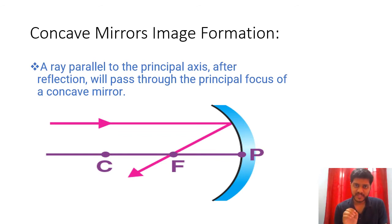Now the image formation. First of all, we have to take certain rays such as we are taking a ray which is parallel to principal axis. So now if a ray is parallel to principal axis,